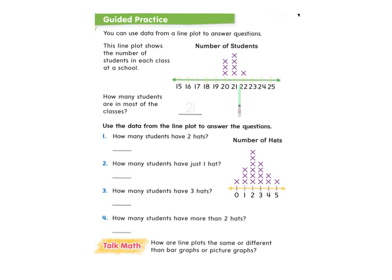Each of these X's represents one class. These numbers down here represent the number of students in that class. These classes all have 20 students, these classes all have 21 students, and only this one has 22 students.